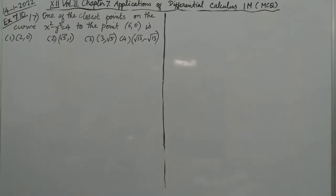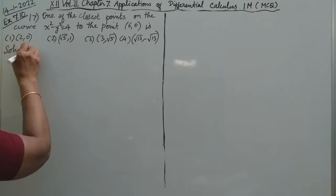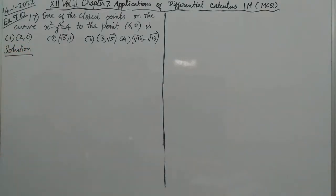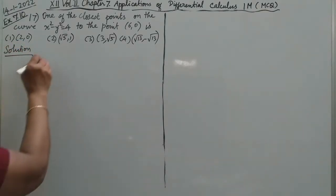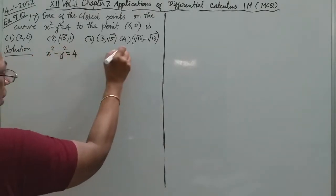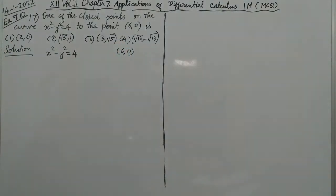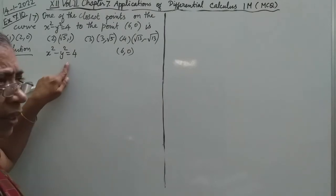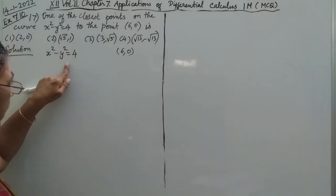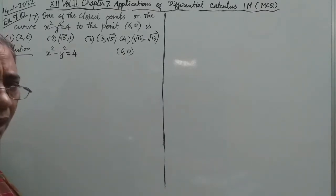Hello friends! Sum number 17. The problem is: find one of the closest points on the curve x squared minus y squared equals 4, to the point (6, 0). So this is a hyperbola — x squared minus y squared equals 4. This is a rectangular hyperbola. And (6, 0) is the given point.